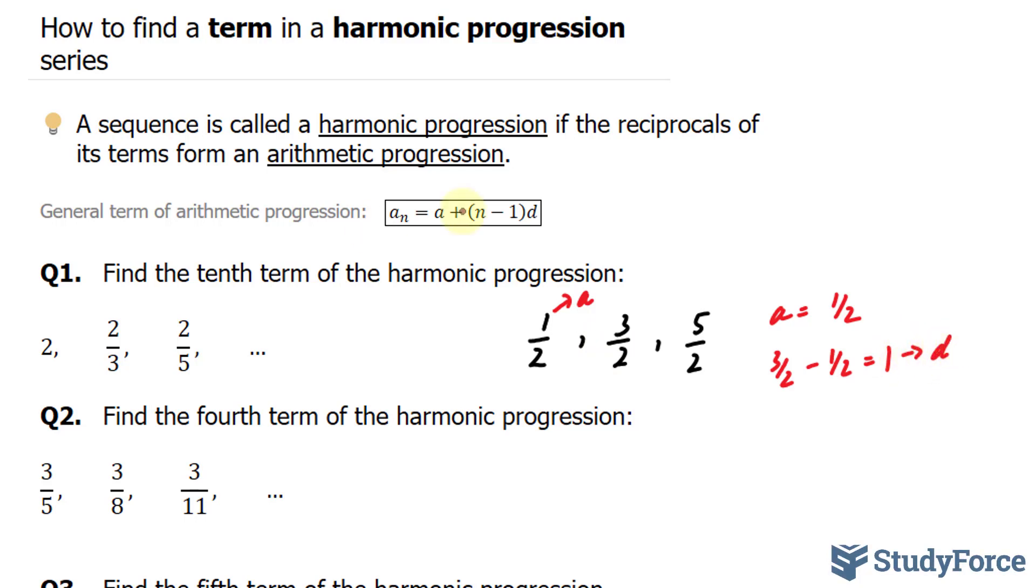Now, according to this formula, we can find a term later on in this series by substituting these values. Let me show you. Since it's the tenth term that we're looking for, I'll denote this by a subscript 10. I'll write out what I know into this formula. So a subscript 10 is equal to my first term of half, plus n is equal to 10 minus 1 times 1.